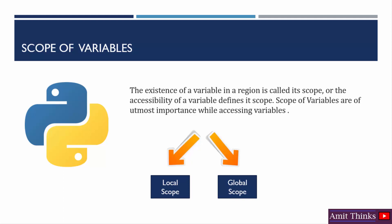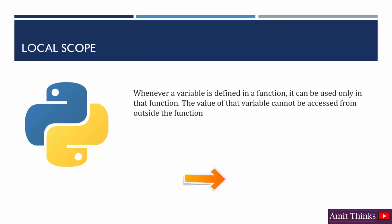We will understand this concept using examples. Let's first go around local scope, then we will focus on global scope. Local scope, as the name suggests — when we define a variable in a function, its value can only be used inside that function. Since we defined that variable inside that function, the scope remains inside only. The value of that variable we can only access from inside the function, not from outside.